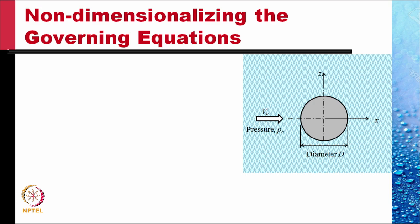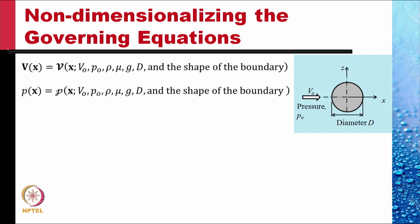We will take the example of flow past a circular cylinder — incompressible steady flow. The far upstream velocity is v₀, the pressure is p₀, and the cylinder diameter for this two-dimensional problem is d. Clearly, the vector velocity v would be a function of x, the location of the point in the flow field, and the list of parameters which include v₀ (the velocity far upstream), p₀ (the pressure far upstream), rho and mu (the properties of the fluid), g (the acceleration due to gravity), d (the size of the cylinder measured by its diameter), and the shape of the boundary, in this case cylindrical.